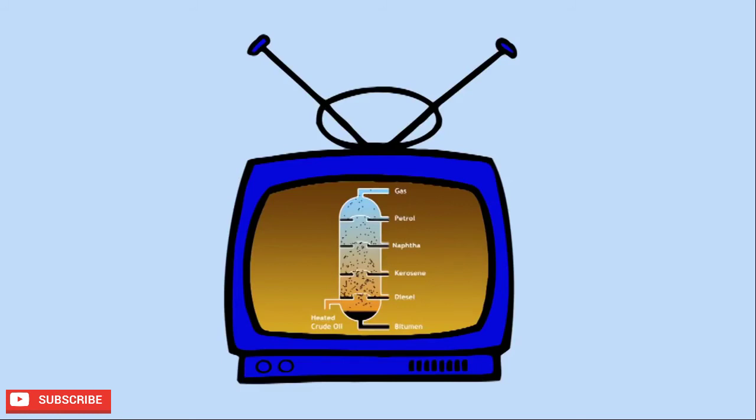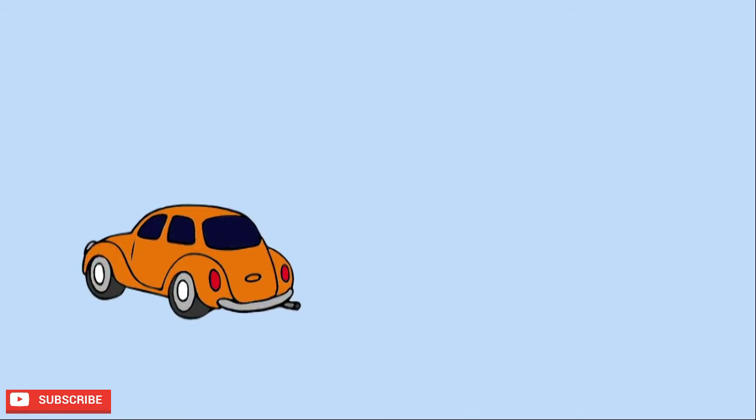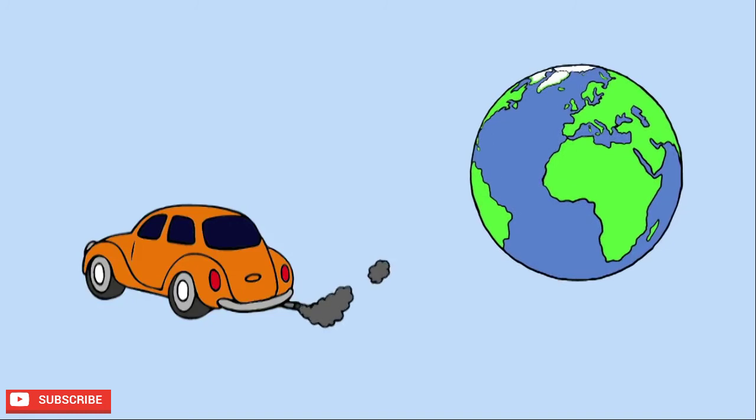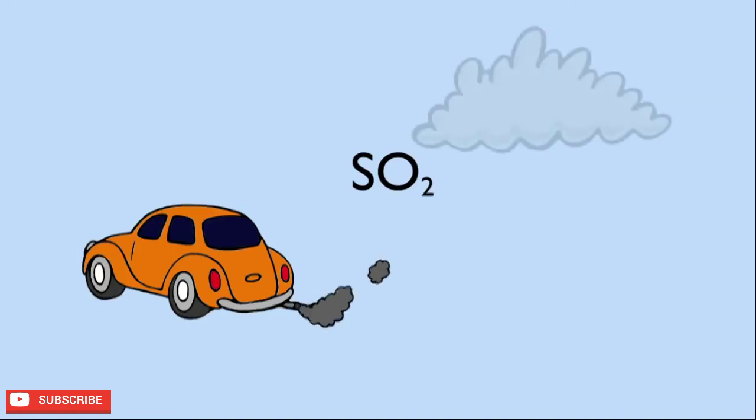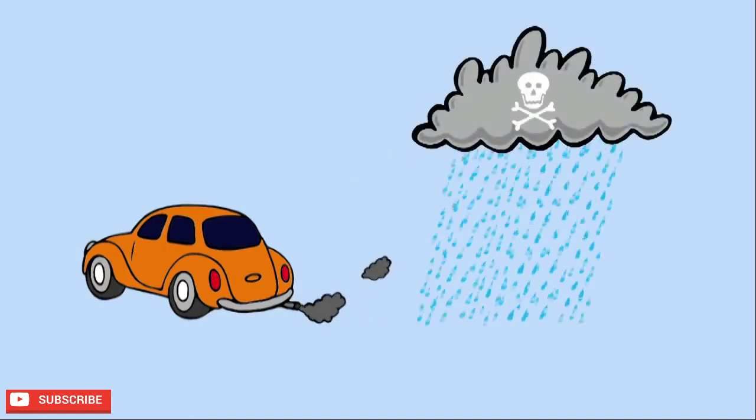However, there are problems associated with fossil fuels. Burning fossil fuels produces carbon dioxide which is a greenhouse gas and contributes to global warming. Sulfur dioxide is another gas that can be formed during combustion which causes acid rain.